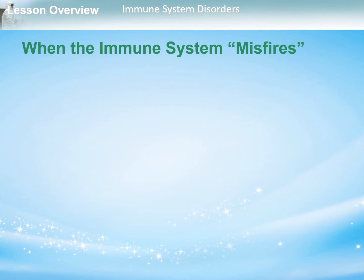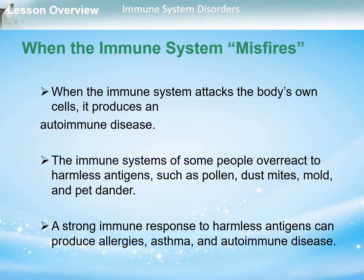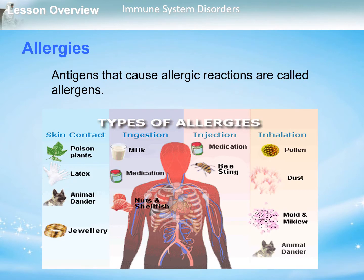So let's start. When the immune system attacks the body's own cells, it produces an autoimmune disease. The immune systems of some people overreact to harmless antigens such as pollen, dust mites, mold, and pet dander. A strong immune response to harmless antigens can produce allergies, asthma, and autoimmune disease. Let's start with allergies — antigens that cause allergic reactions are called allergens.